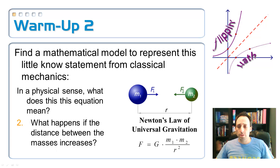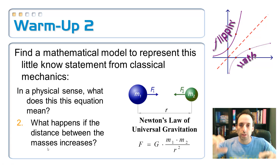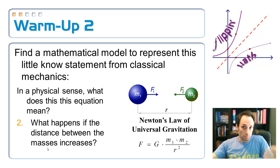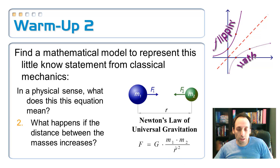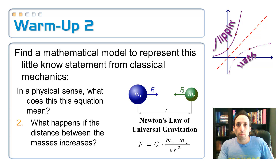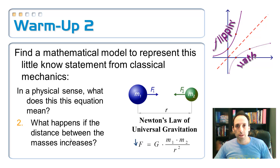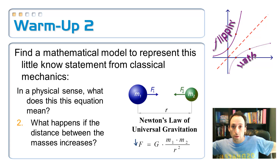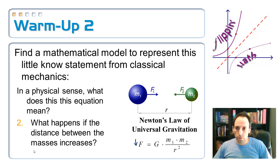What happens if the distance between them increases? If these are two planets getting further and further apart, since the distance is in the denominator, we're squaring a bigger number and dividing by it, so the whole thing goes down. That makes sense — if planets get further apart, gravity between them is weaker. So the force decreases.